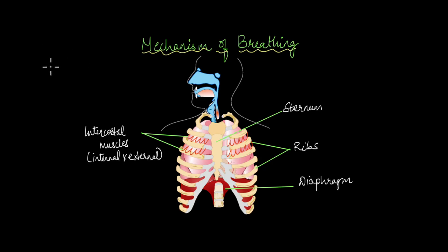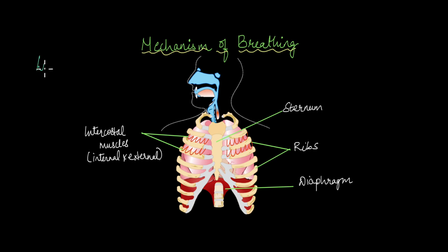In previous videos, we talked about the different parts of the respiratory system. In today's video, we're going to focus on the mechanism of breathing, which is the process by which gas exchange takes place in the body. The main parts involved include the lungs, the sternum and ribs, the dome-shaped diaphragm situated below the lungs, and the intercostal muscles.